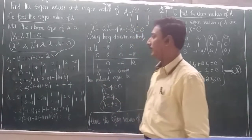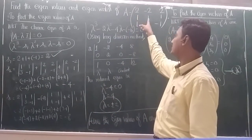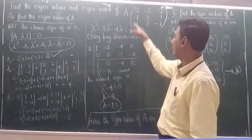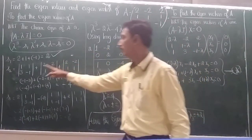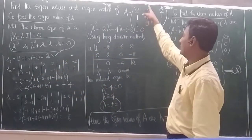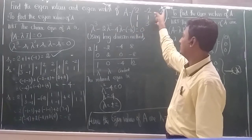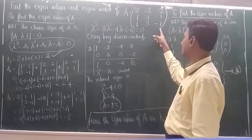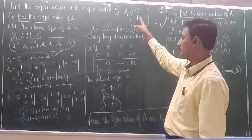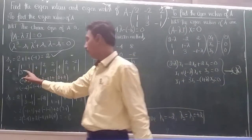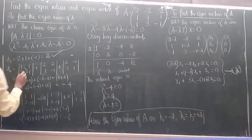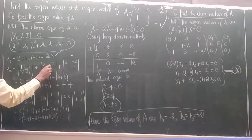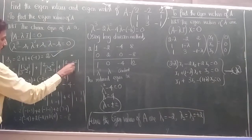S₂ represents the sum of the diagonal minors. The first minor closes off the first row and column: determinant of [1,1; 3,−1]. The second minor closes the second row and column: determinant of [2,2; 2,−1] giving −2 − (−4) = 2. Wait, computing: first minor = (1)(−1) − (1)(3) = −1 − 3 = −4. Second minor = (2)(−1) − (2)(2) = −2 − 4... and plus 2.